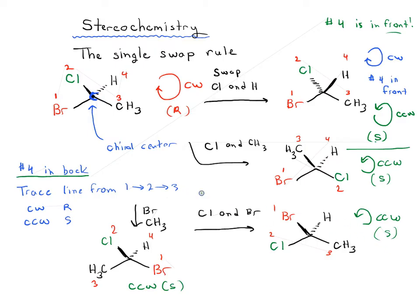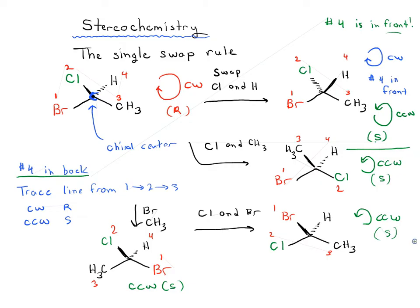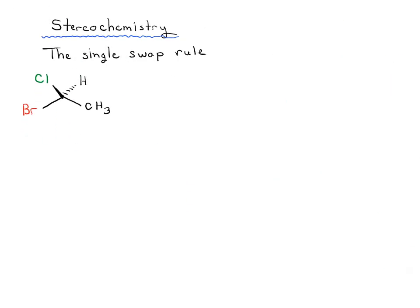We'll do the other two examples, which are going to be a little bit trickier, because we're actually going to put hydrogen in the plane of the page. There are two swaps we haven't done yet, and if hydrogen is not in the front or in the back but on the side, this is a little bit trickier. So let's swap H and CH3.